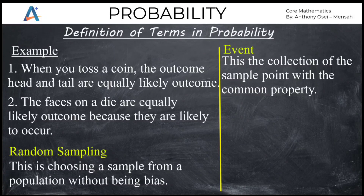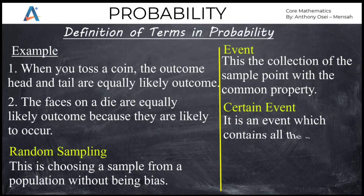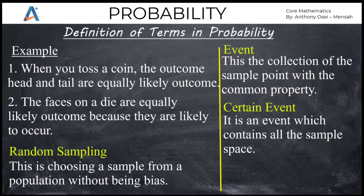Now let's look at the types of events. The first type is a certain event. An event which contains all the sample space is referred to as a certain event. That means if you are able to get all the occurrences needed in a particular trial or experiment, that event becomes a certain event.